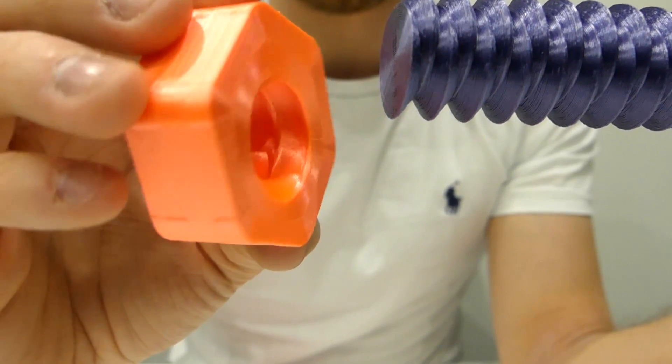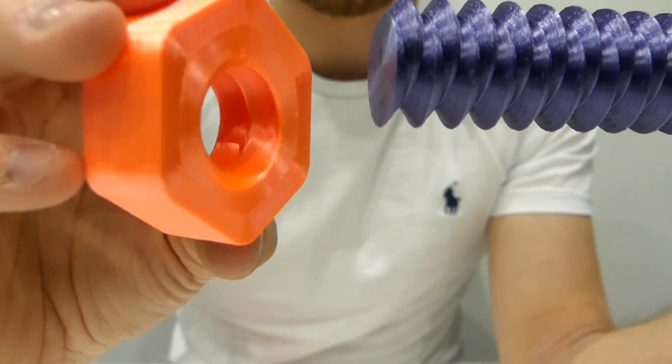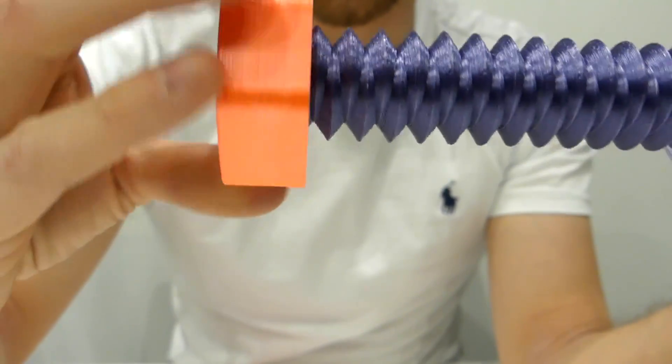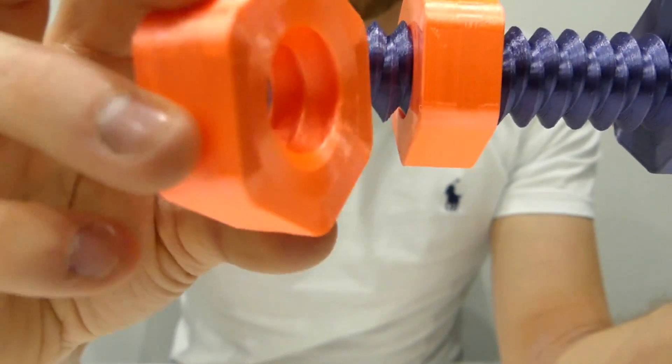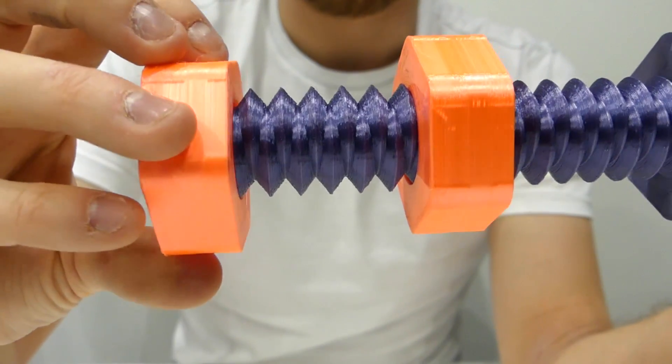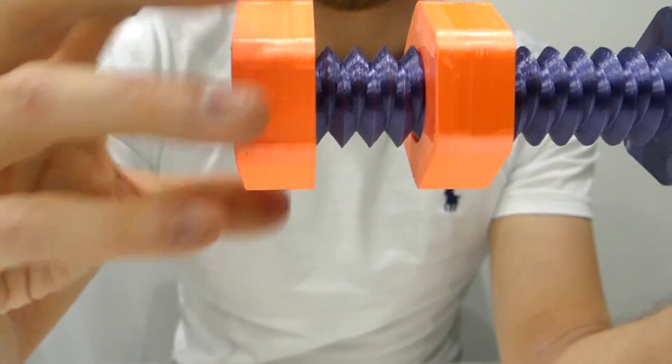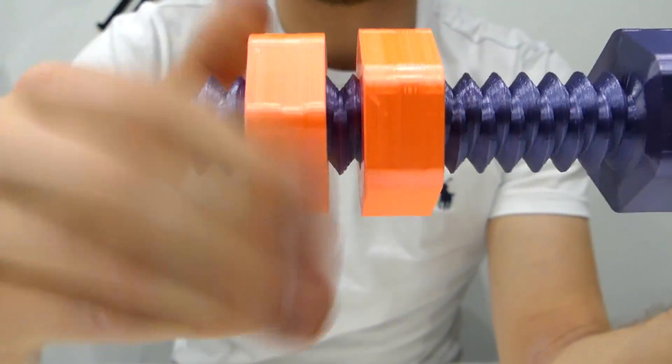On one side you've got this nut with a counterclockwise thread which goes in that direction. Then when I take the other one with another large thread but oriented differently, it's going to turn really nicely in the other direction, and that's how it works.